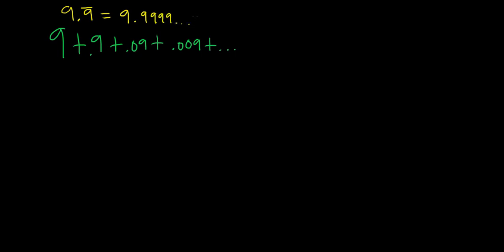And then what you can do is you can break this up as 9 plus 0.9 plus 0.09 plus 0.009, etc. And then just adding on the decimals. That's what we have here.